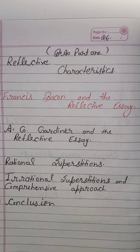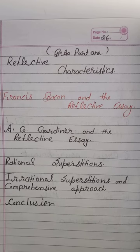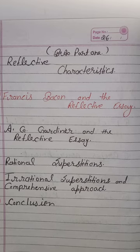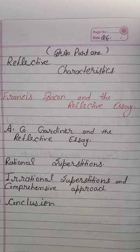The next topic is rational superstition. Gardner points out the fact that all superstitions are not irrational — some are based on logic also. Gardner, being a rational thinker, does not find justification in becoming superstitious, but according to him, it is also unjust to violate a sensible precaution. For example, it is a superstition that no man should walk under a ladder.